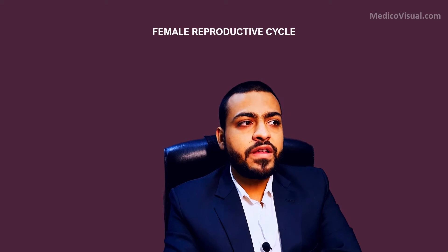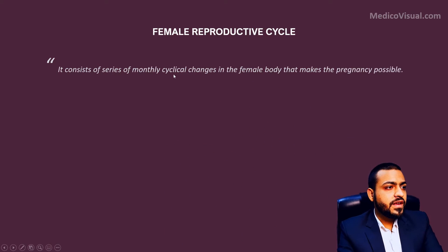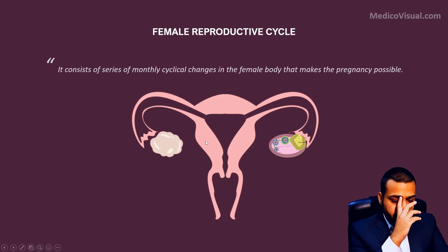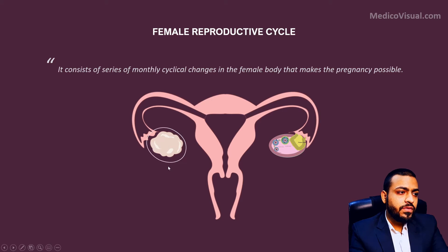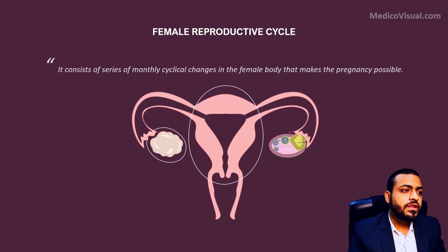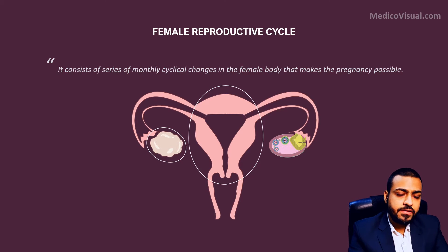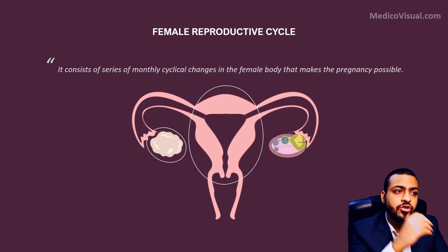What is the female reproductive cycle? It consists of a series of monthly cyclical changes in the female body that make pregnancy possible. The major monthly changes occur in the ovary and uterus, but these rhythmical changes occur in almost the whole body of the female. Even there are some behavioral changes, and even the basal body temperature slightly changes throughout this cycle.